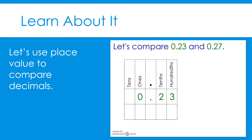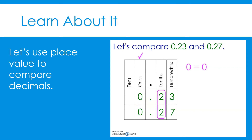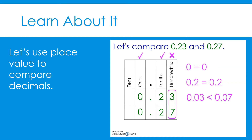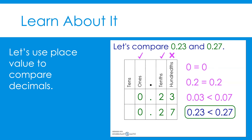Now let's write twenty-seven hundredths: again, no tens, write a zero in the ones place, place the decimal point, write a two in the tenths place, and write a seven in the hundredths place. When comparing decimals using place value, begin with the largest place value first, just like with whole numbers. The ones values are equal — zero equals zero. The tenths values are also equal — two tenths equals two tenths. So let's compare the hundredths place. Three hundredths is less than seven hundredths. Therefore, twenty-three hundredths is less than twenty-seven hundredths.